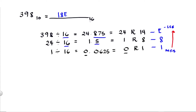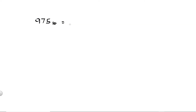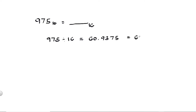For our second example, let's say we have 975 decimal and convert it to hexadecimal. The first step is to divide 975 by 16. 975 divided by 16 is equal to 60. To get the remainder, we multiply 0.9375 by 16, which equals 15. So we have 60 remainder 15.